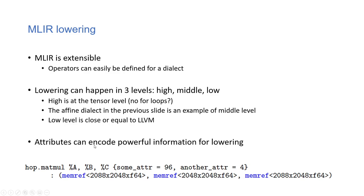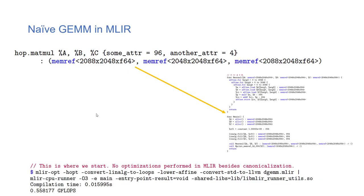The author mentions that the operation attributes can include powerful information for lowering. Starting from the naive high-level operation and lowering to the nested for-loop with no optimizations, the command is: MLIR CPU runner, lowering to linalg, to loops, to standard, then to LLVM. The performance from the naive implementation is very poor — 0.55 gigaflops.